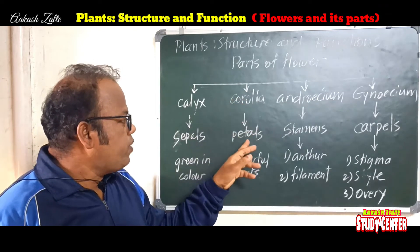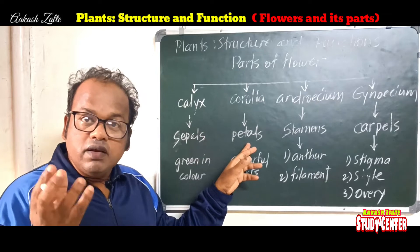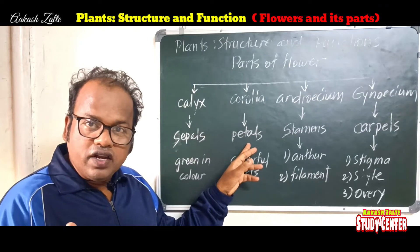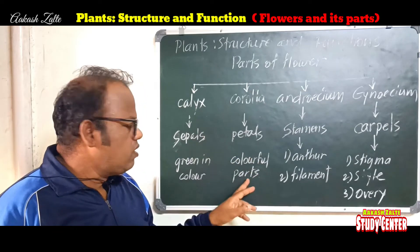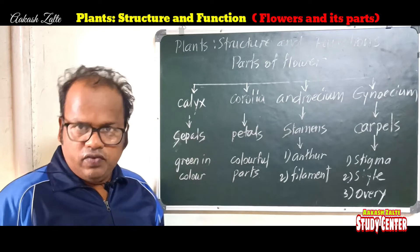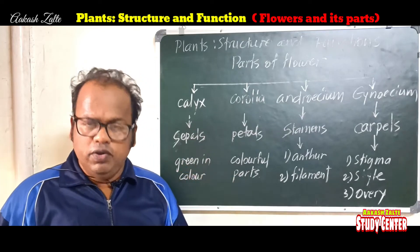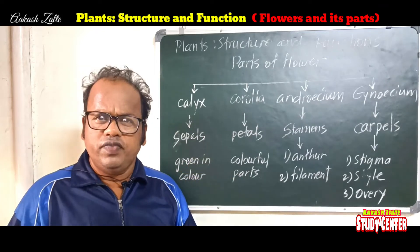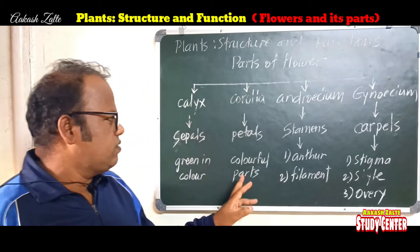Corolla is made up of petals, which are different in color — whether it is red, blue, yellow, etc. There are many colors of petals.